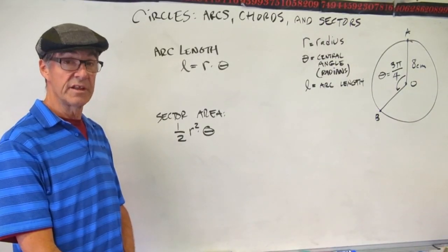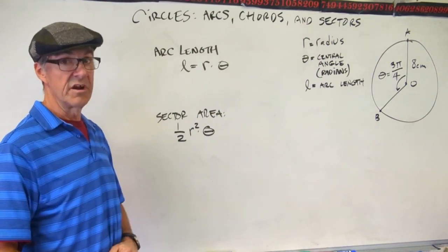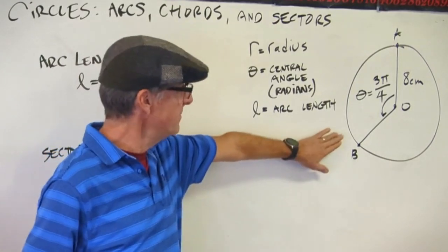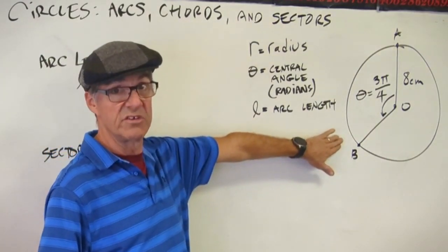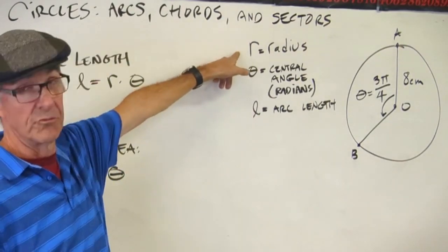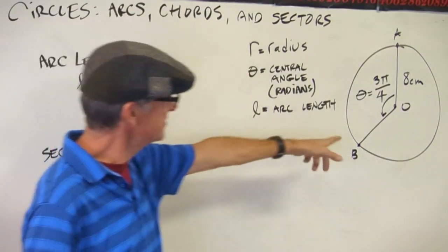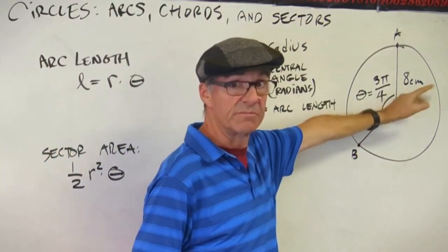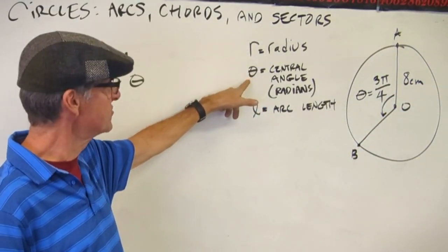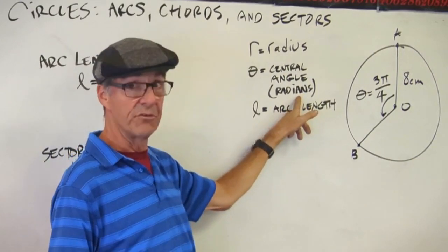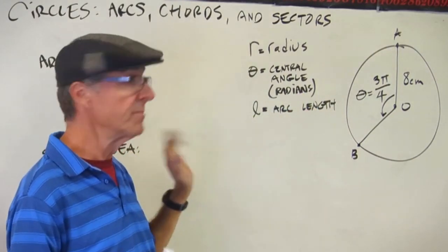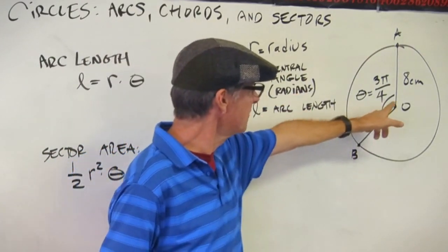Let's do a couple quick little problems about arc length and sector area. First, let's define some variables. I've put a diagram here with some measurements on it. We're going to use that to do some calculations. Our radius in this diagram is 8 centimeters. Second, theta here is the central angle in radians. We don't use degrees with this formula, we use radians. So I've marked the angle going from here to here: theta equals 3π over 4.